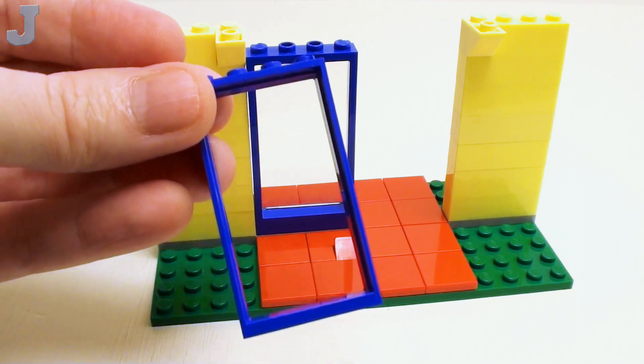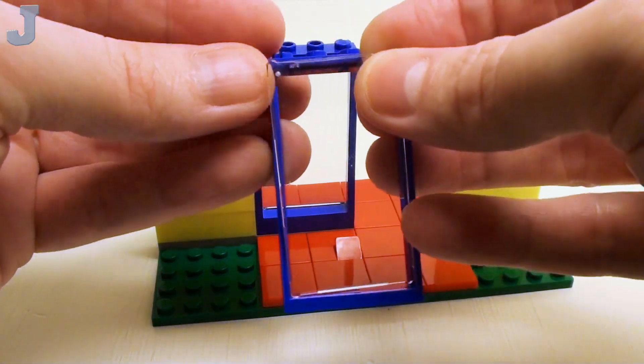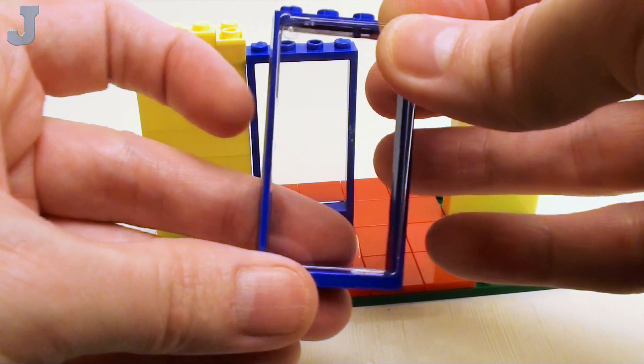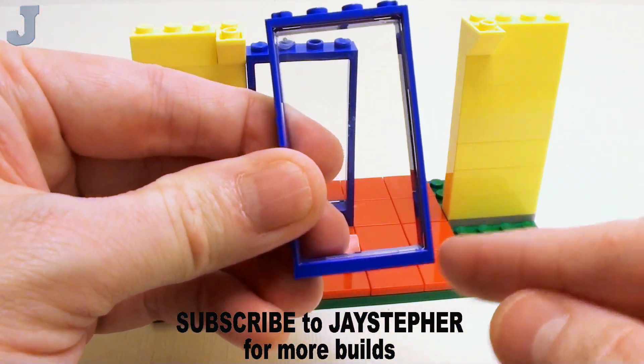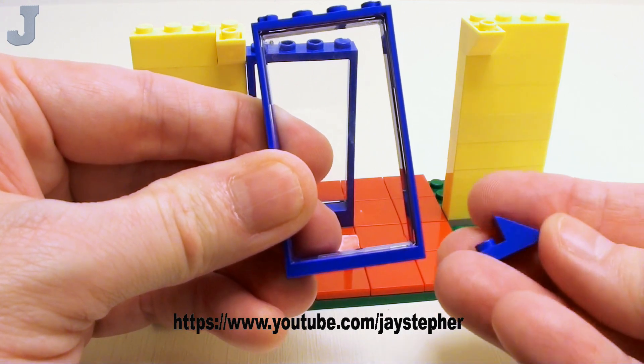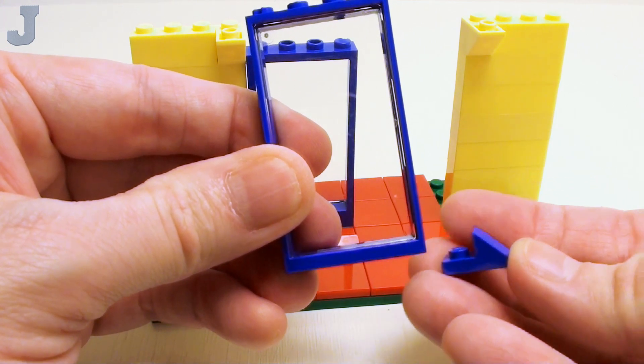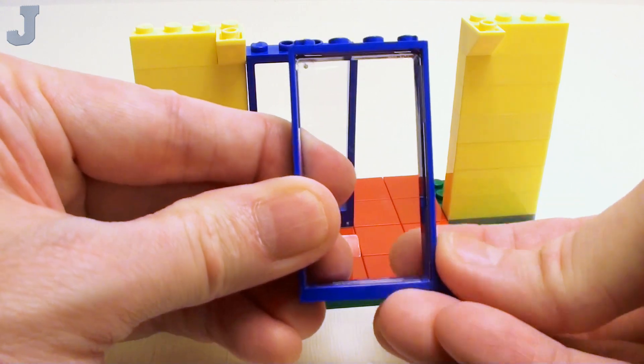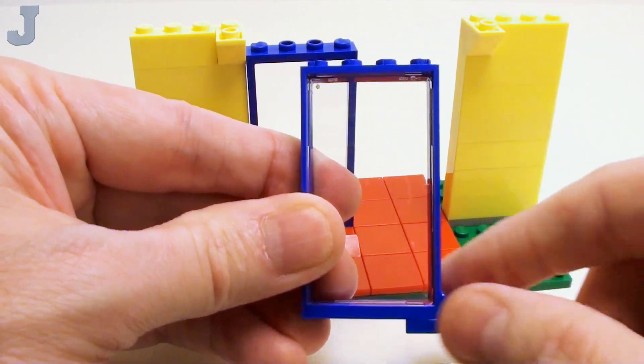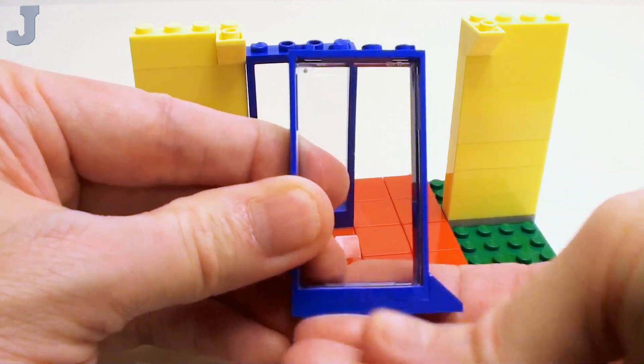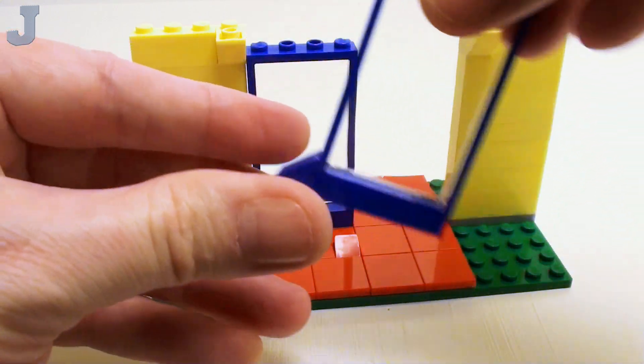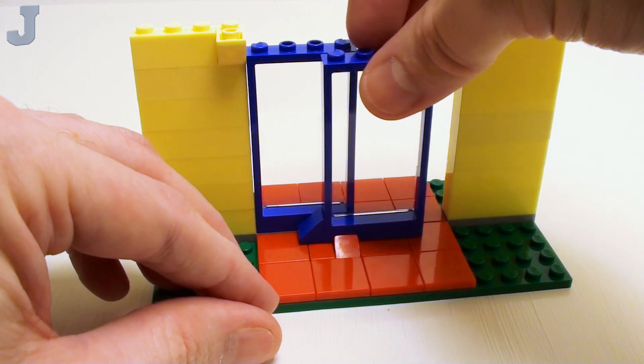Take another 1 by 4 by 6 frame. Let's set a piece of glass inside the frame. And this right here, I'm going to take one of these 45 degree slopes with the plate. Set this right here. This is going to act as our little guide to keep it inside the track when the door is closed. And a 1 by 3 plate on the bottom. Now we're going to set this in here.